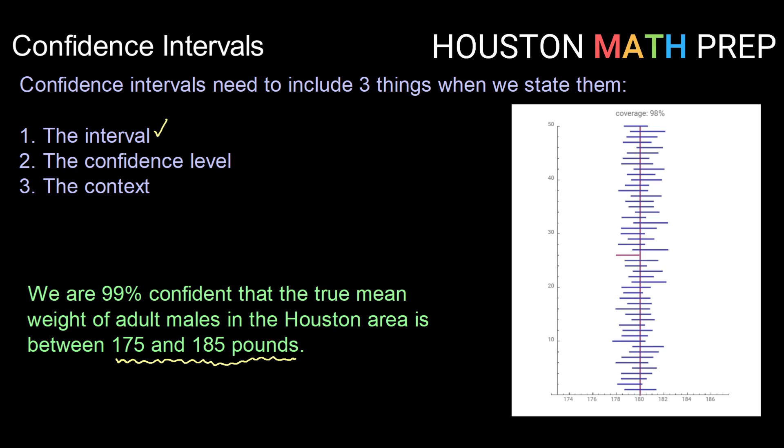The second thing that we wanted to include was our confidence level. Now there are some typical or standard confidence levels. Some of them include 80%, 90%, 95%, and 99%. But you can actually use any level of confidence. Now confidence level talks about how confident we are that our procedure will allow us to create an interval that is accurate.